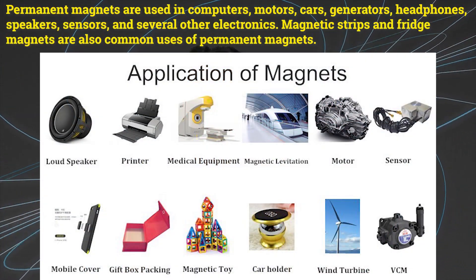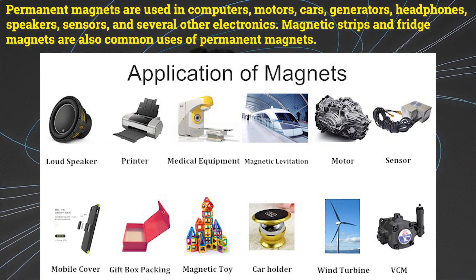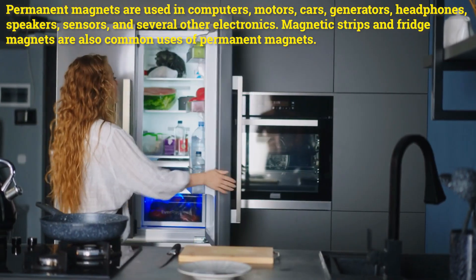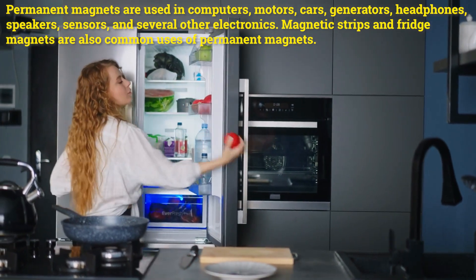Permanent magnets are used in computers, motors, cars, generators, headphones, speakers, sensors, and several other electronics. Magnetic strips and fridge magnets are also common uses of permanent magnets.